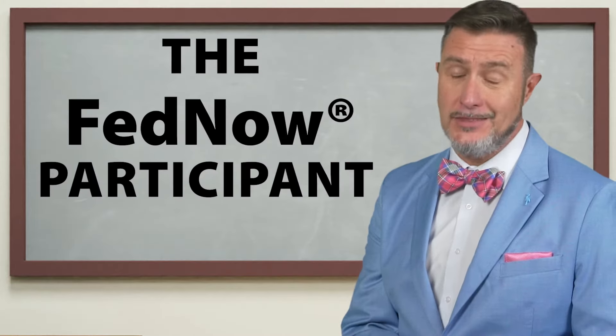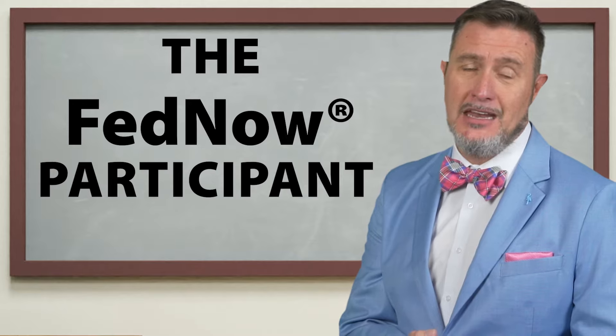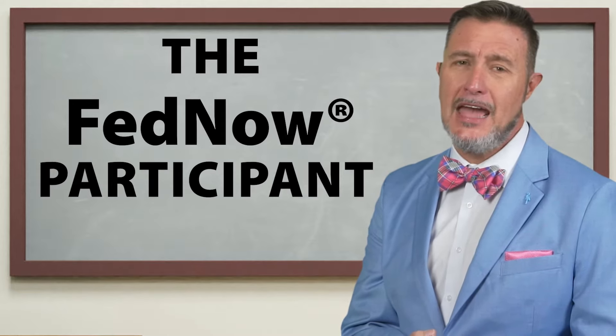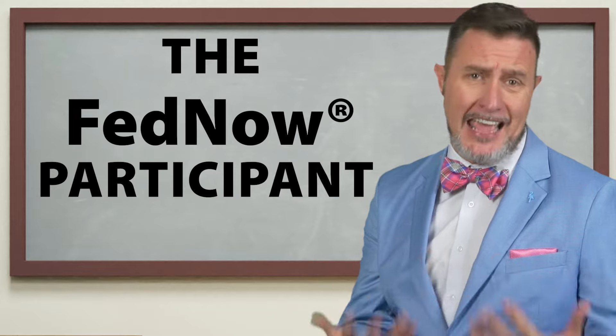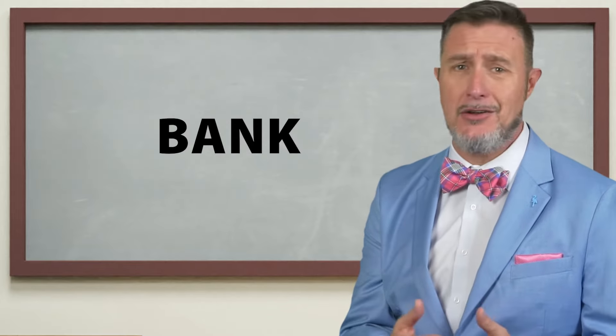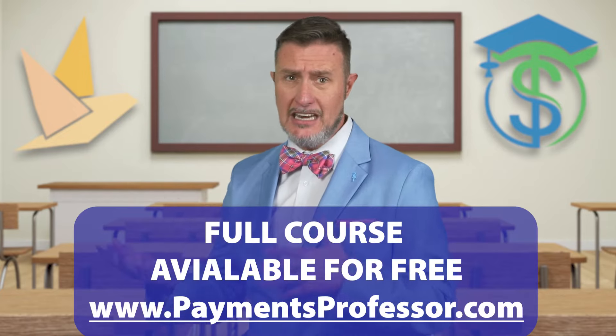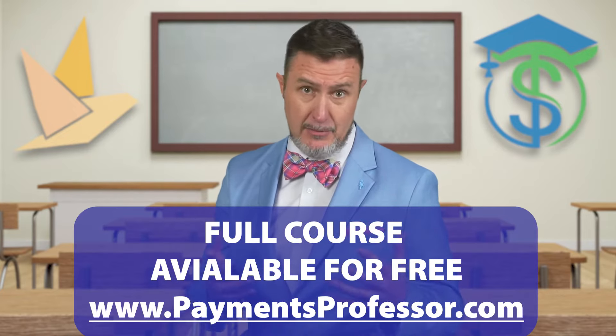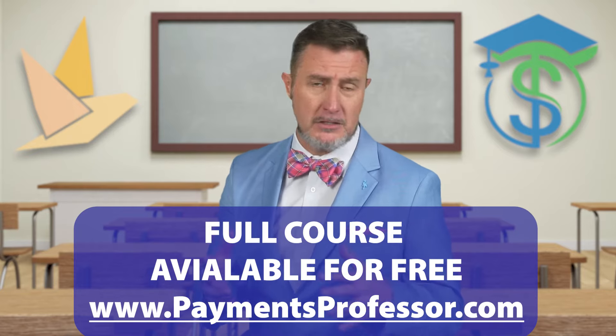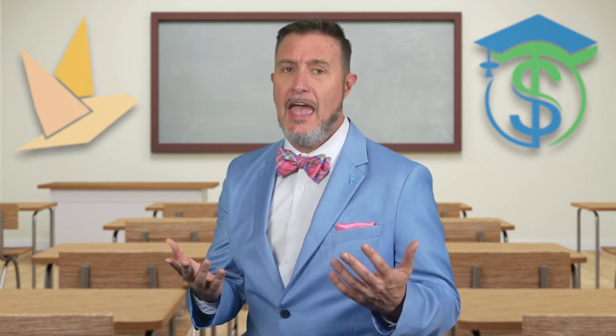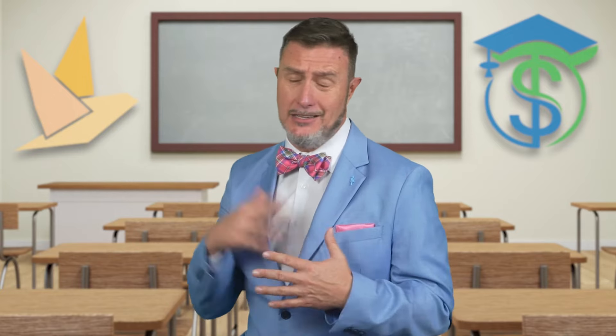First, we have the FedNow participant. The FedNow participant is one of the most important ones. This is a financial institution — it's going to be a bank or a credit union. A FedNow participant will be the ones using the system to both send and receive instant payments, maybe even reports, possibly liquidity management transfers, and they're going to be doing that most likely on behalf of their account holders. A participant can choose to only receive payments and not do any of the other stuff.